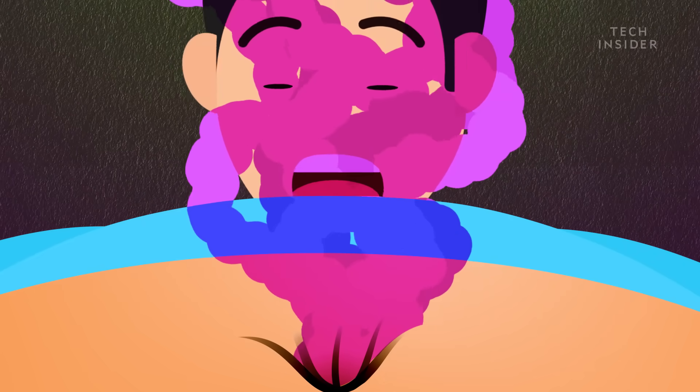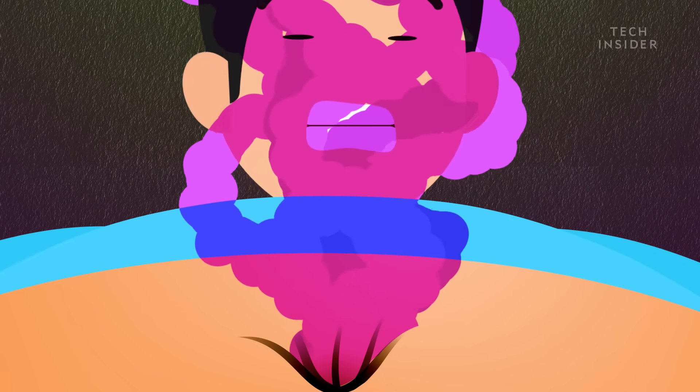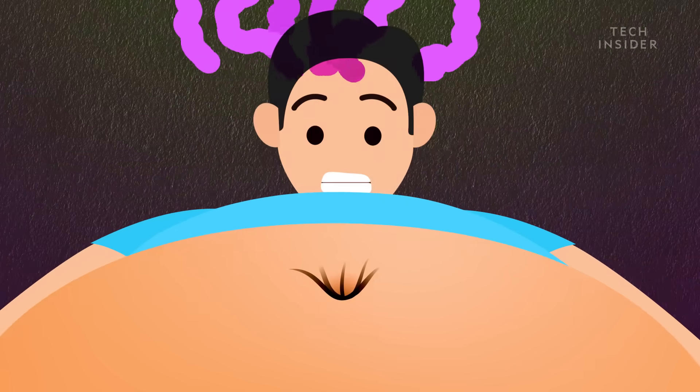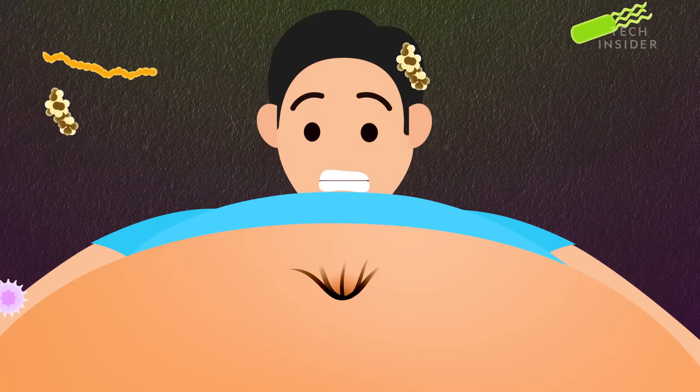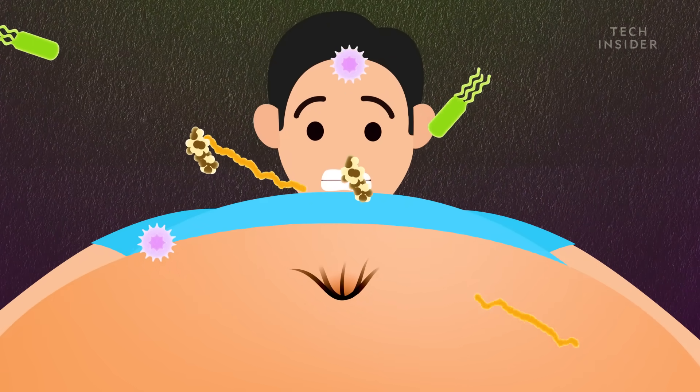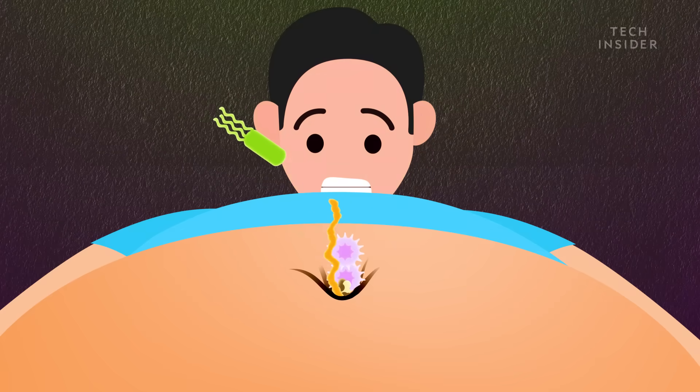When common navel microbes like corynebacterium build up, they emit pungent odors, similar to body odor. But the worst case is that your navel will get infected. Not just by staph, but also by microbes that cause strep throat and yeast infections.